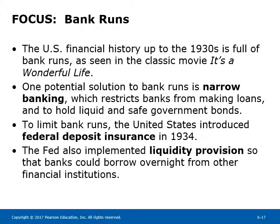US financial history up to the 1930s is full of bank runs, as seen in the classic movie It's a Wonderful Life. One potential solution to bank runs is narrow banking, which restricts banks from making loans and requires them to hold liquid and safe government bonds. To limit bank runs, the US introduced Federal Deposit Insurance in 1934. The Fed also implemented liquidity provision so that banks could borrow overnight from other financial institutions.